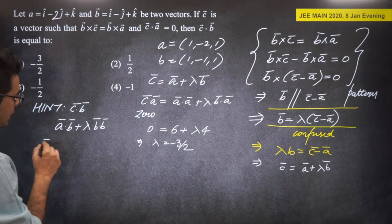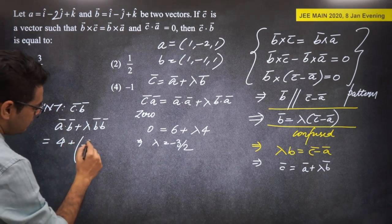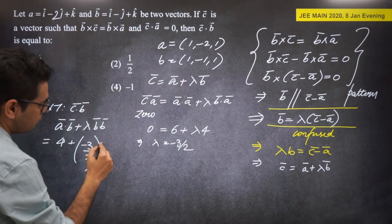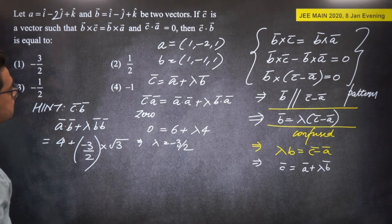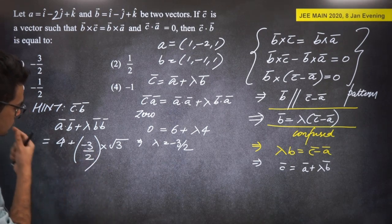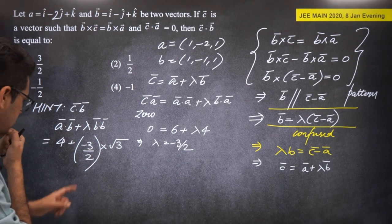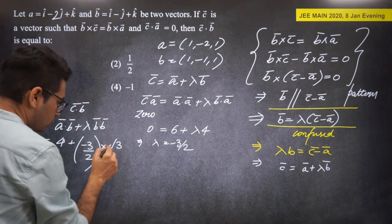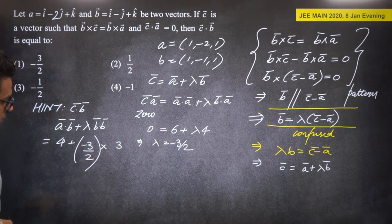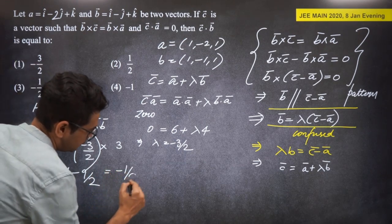Actually, using C·A = 0: (A + lambda*B)·A = A·A + lambda*(B·A) = 6 + lambda*0 — this doesn't help. Use the given B·A = 0 differently. A·B = 1*1 + (-2)*(-1) + 1*1 = 1 + 2 + 1 = 4. Then lambda: from the full equation, lambda = -3/2. So C·B = A·B + lambda*|B|² = 4 + (-3/2)*3 = 4 - 9/2 = -1/2.